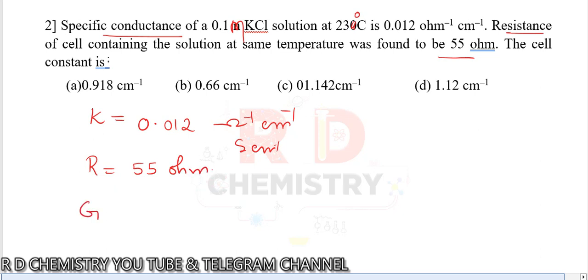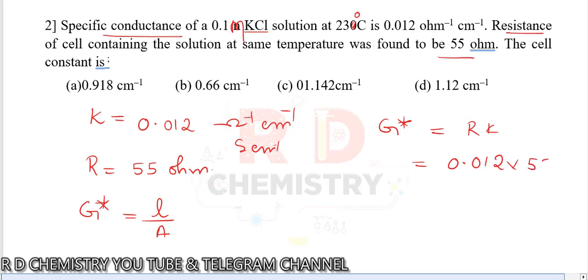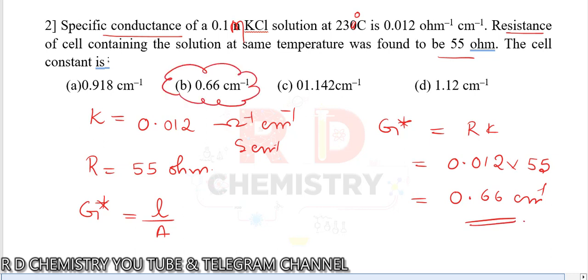Therefore, cell constant G star. There are two types of formula: L by A, or G star equals R times kappa, which is equal to 55 times 0.012, giving 0.66 centimeter inverse. The answer is option B.